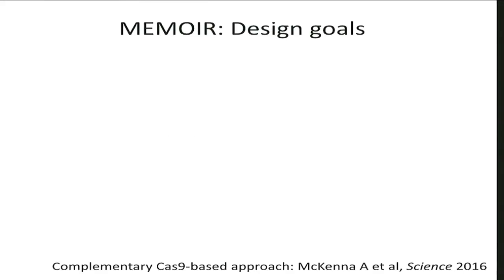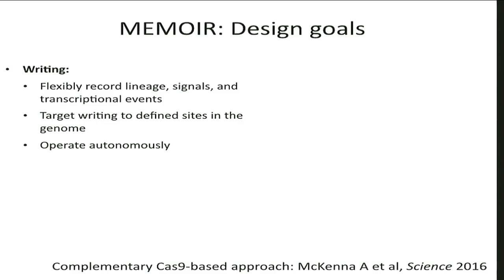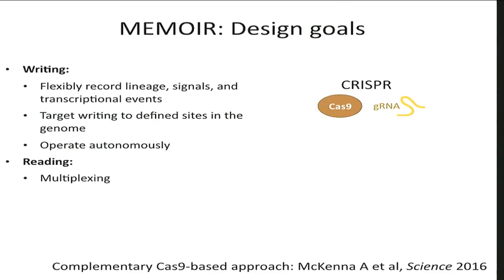MEMOIR had several design goals categorized into two processes. First is writing. For writing, we want to be able to record lineage, but also signals and transcriptional events going on inside cells. We want to be flexible and able to target the writing to defined sites in the genome so we can find the information that we wrote. We want this system to operate autonomously so we don't have to manipulate it — it can occur inside an embryo even if it's not directly manipulable. The obvious tool for this is CRISPR, which can write mutations at any site in the genome that we choose.